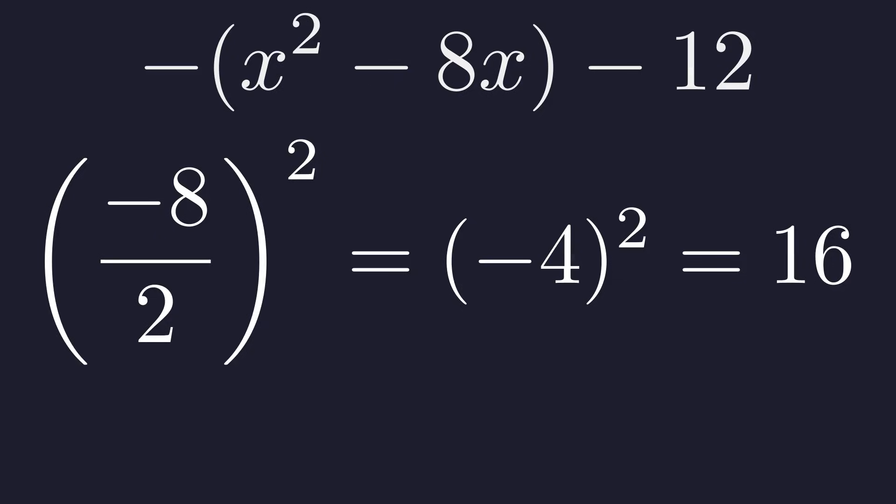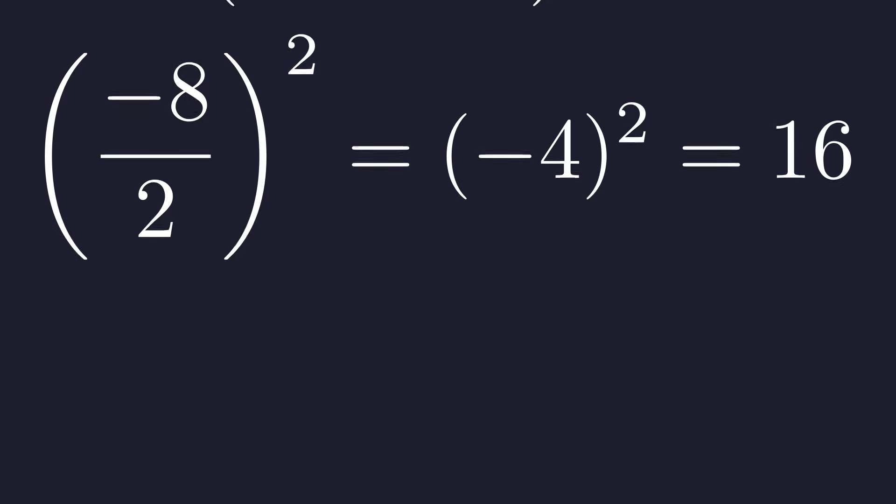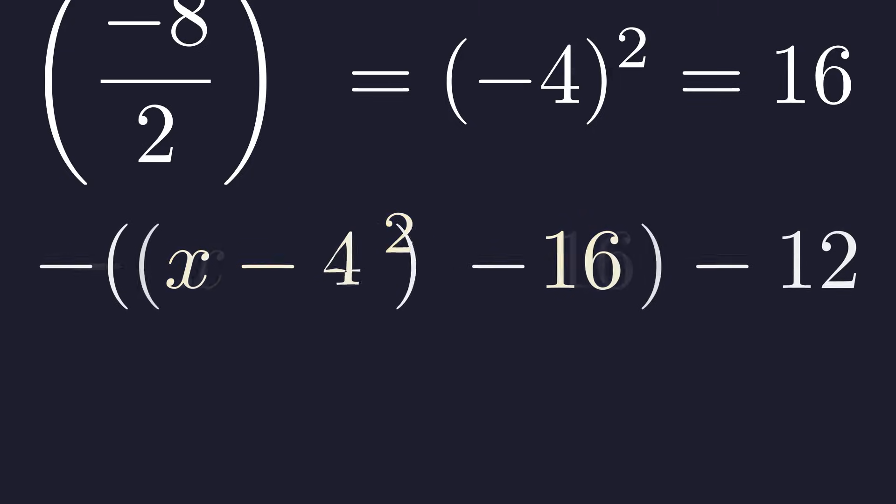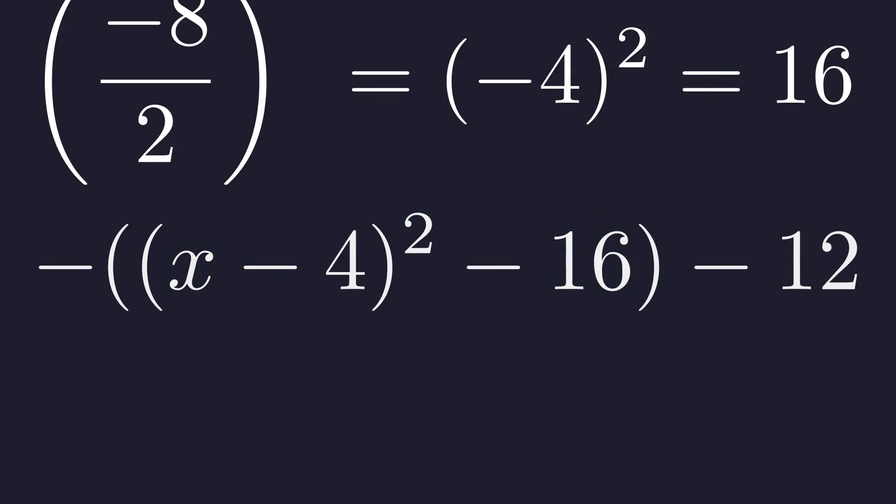To maintain the value of the expression, we will both add and subtract 16 inside the parentheses. This manipulation doesn't change the expression's overall value, but it regroups the terms in a very useful way. The first three terms, x squared minus 8x plus 16, now form a perfect square. This perfect square trinomial factors into the quantity x minus 4 squared.